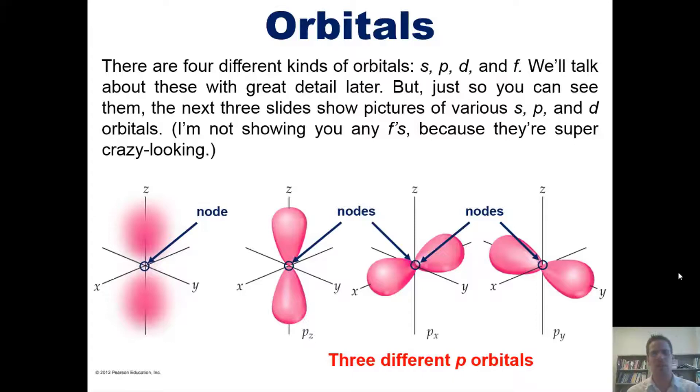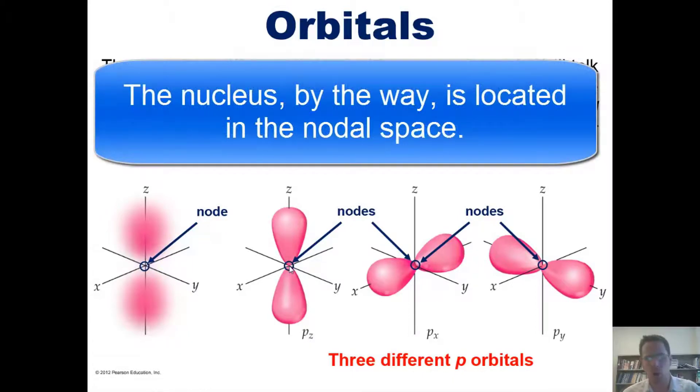Those happen to be locations at which the electrons mathematically cannot be found. In other words, an electron that might in one moment be zooming around this lobe up here and then later in the lobe down here at the bottom can never ever be found in this nodal space, this space right here called a node.